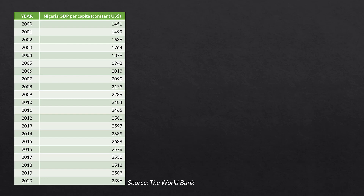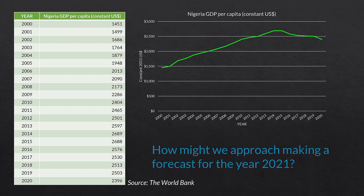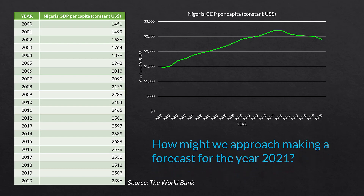The data we are using is Nigeria's GDP per capita from 2000 up through the year 2020. We can see a graph of it here. It goes up quite a bit, has an inflection point around 2014, and then flattens out a bit, if not decreases. Ultimately we are interested in making a forecast for the next year, which is 2021.